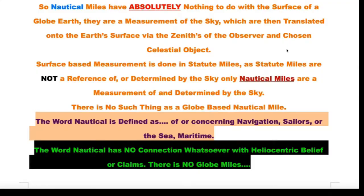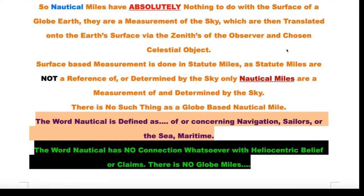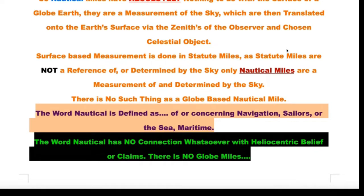There is no such thing as a globe-based nautical mile. No. The word nautical is defined as of or concerning navigation, sailors, or the sea, maritime. The word nautical has no connection whatsoever with heliocentric belief or claims. There is no globe miles. Nautical miles depend on a spherical Earth. That is what they are. The distance, the circumference of Earth. You chop those into 360 degrees, multiply by 60, and you get approximately 21,880 whatever the fuck nautical miles.